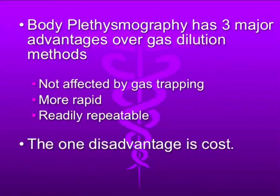Body plethysmography has three major advantages over gas dilution. First, it's not affected by gas trapping, so you can measure even the volume that's trapped, giving you a much more accurate RV. Second, it's very rapid — it doesn't take several minutes and several breaths. Third, it's easily repeatable. With helium dilution and nitrogen washout, you have to wait until all that nitrogen is back in the lungs and the extra oxygen or helium is cleared — there's a significant time factor.